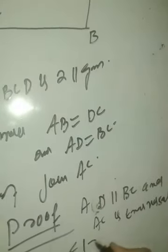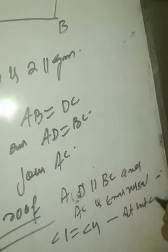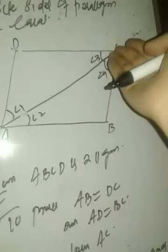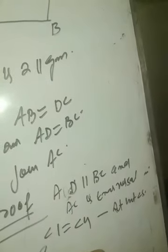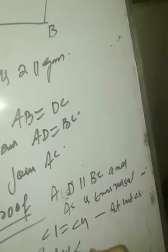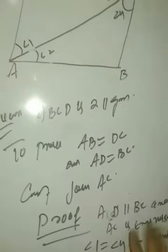Similarly, AB ∥ DC and treating AC as transversal, angle 2 equals angle 3 — again by alternate interior angles. So we have: angle 1 equals angle 4 (alternate interior angles) and angle 2 equals angle 3 (alternate interior angles).